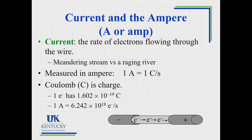A coulomb is the SI unit for charge, and one electron carries a very tiny amount of coulombs. To have one amp, you need an enormous number of electrons flowing per second. So: voltage is cell potential, and amps measure the current of electrons. We won't work with amps at this point — we'll stay in the world of voltage as we begin this chapter.